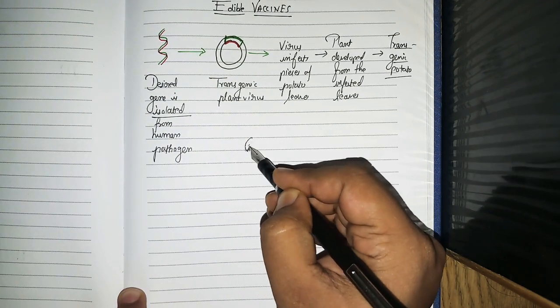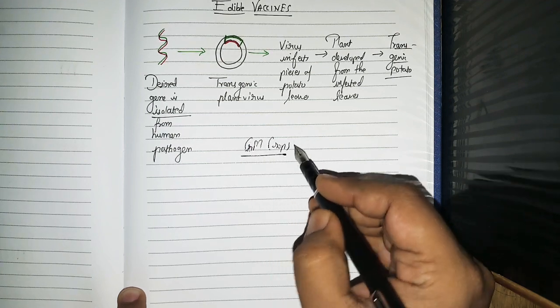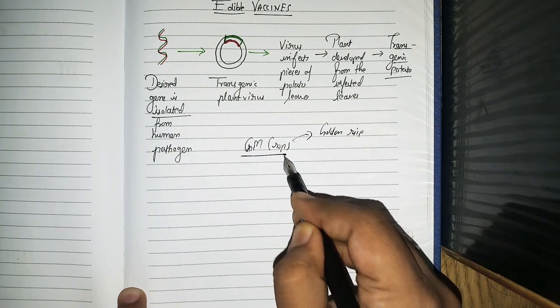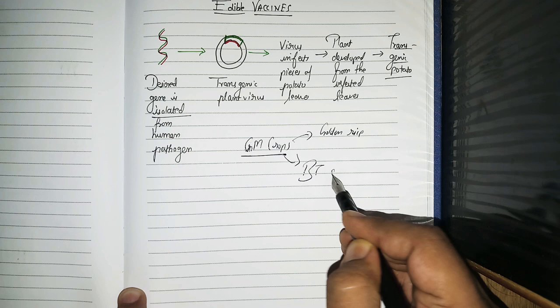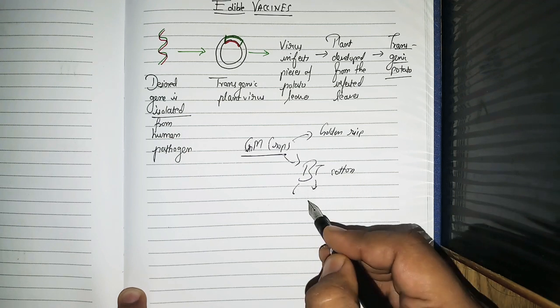Remember, the same technique, the similar technique is used for making genetically modified crops. An important topic, for example golden rice. Famous one is BT cotton, BT is Bacillus thuringiensis.